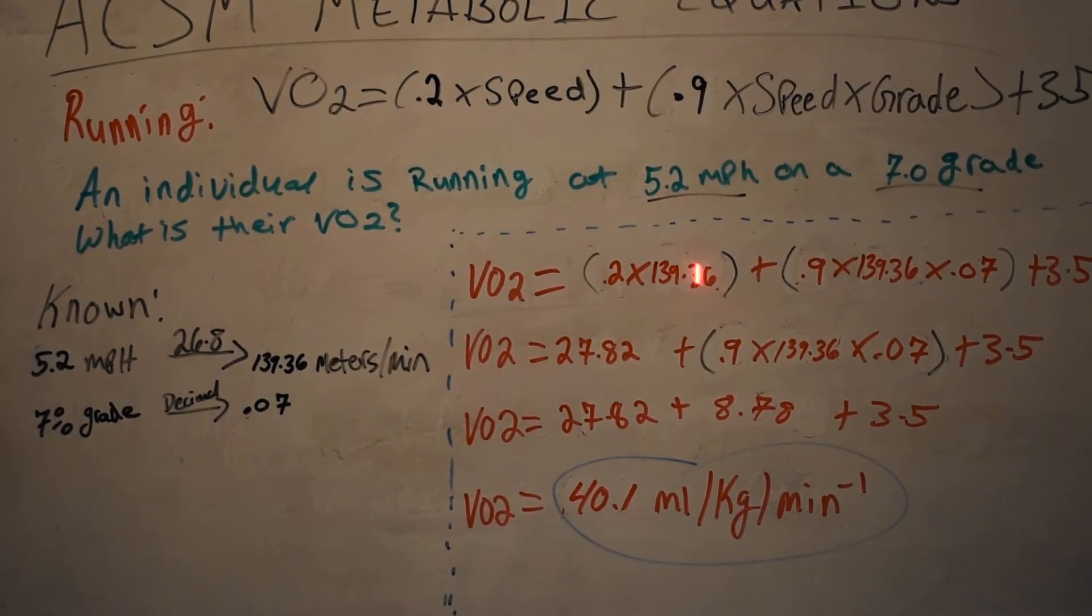Now 0.2 times 139.36 equals 27.82. So I'm just going to rewrite the equation: VO2 equals 27.82, and then plus the second part of my equation which just comes from up here: 0.9 times 139.36 times 0.07, and of course the 3.5 resting VO2.